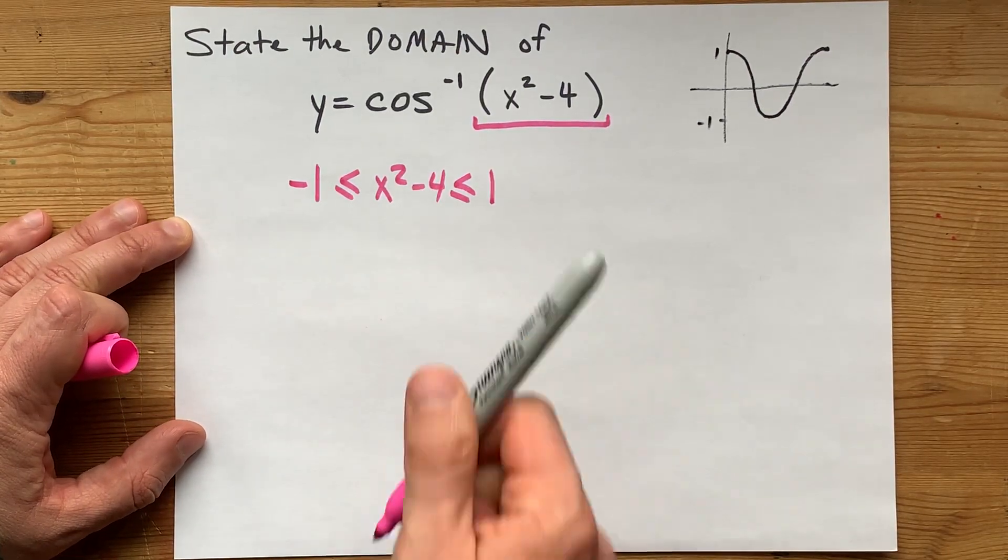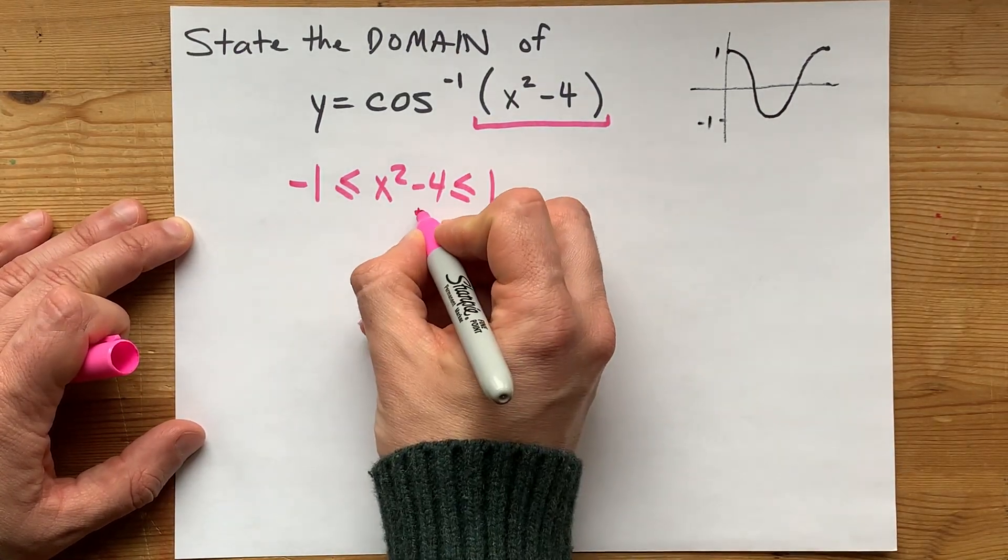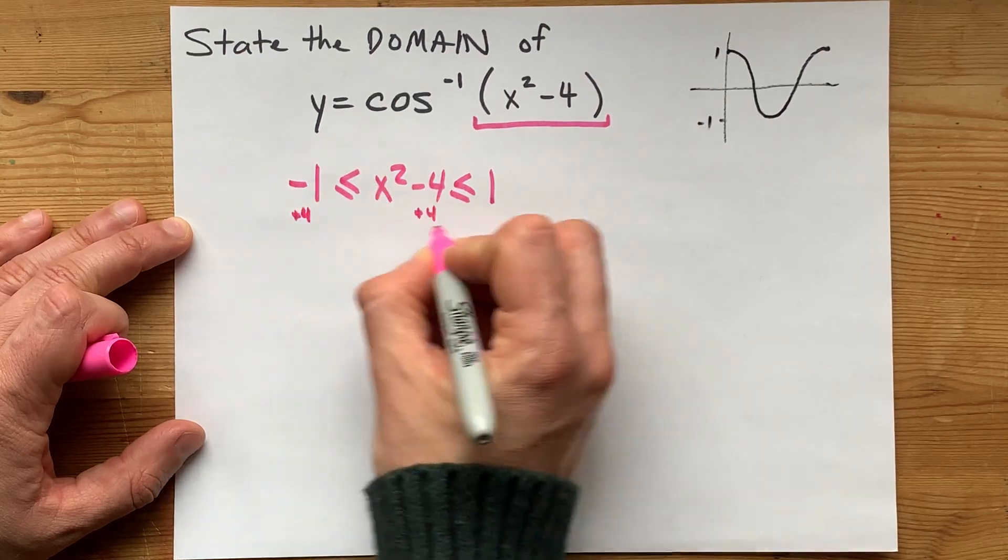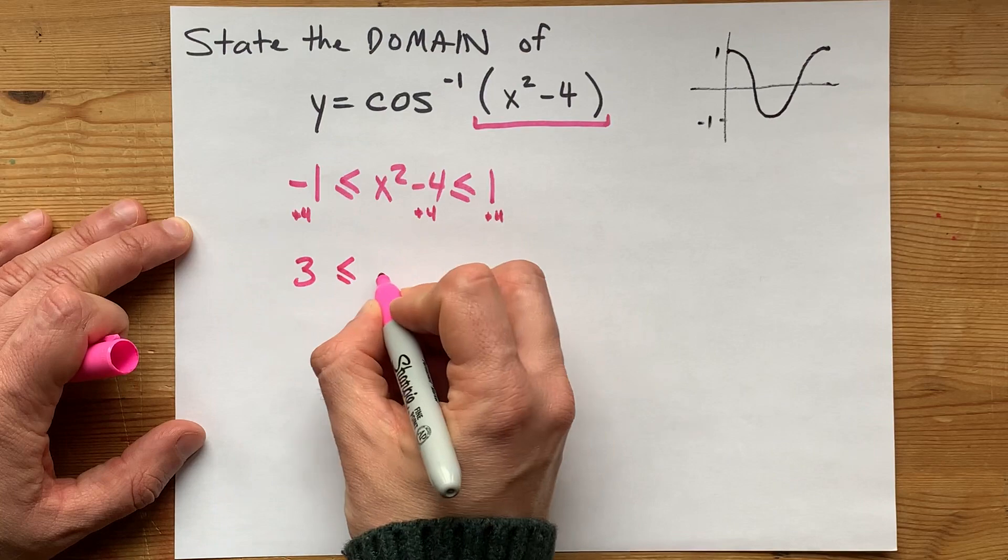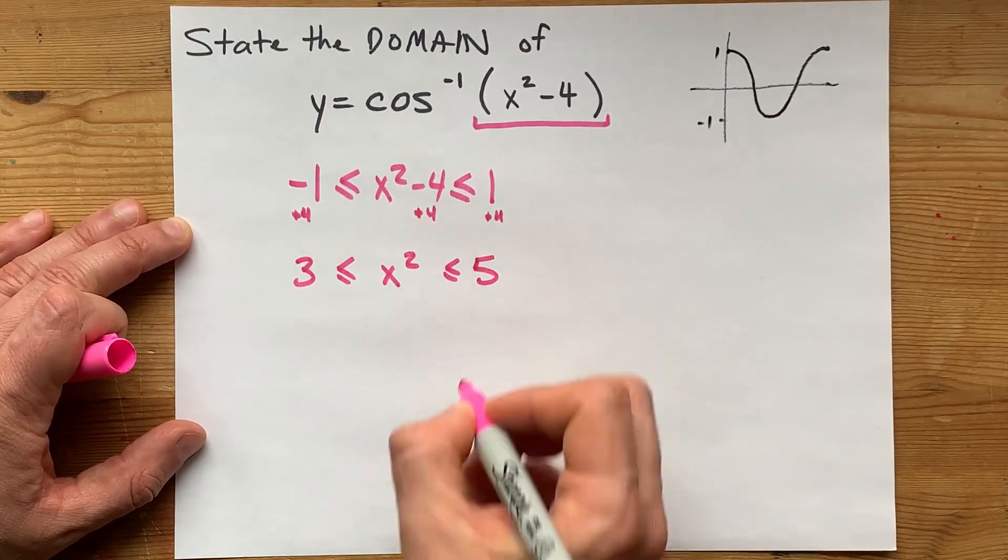First I'm going to undo my negative 4 here. I'm going to add 4 to all sides of this inequality. I've got 3 is less than or equal to x squared is less than or equal to 5.